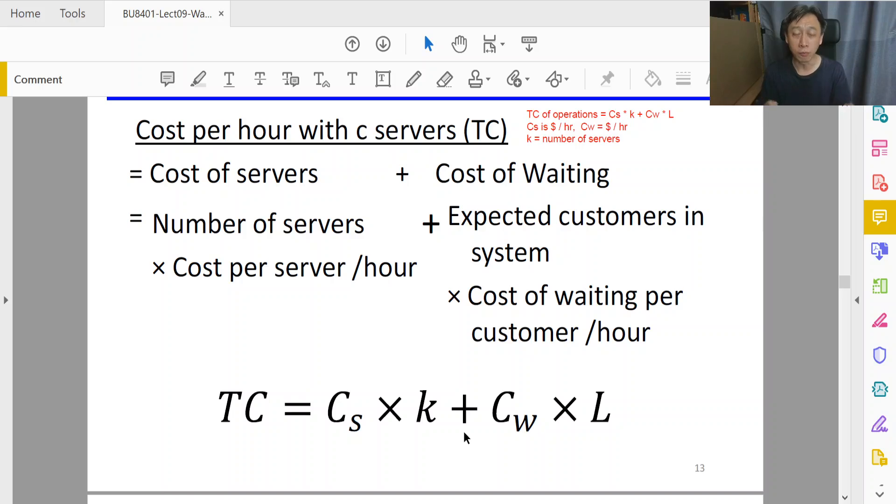So the easiest of them all that captures the essence of total cost of operations of the queue system is this: Cs times k - k is the adjustment variable, how many servers do we need - plus Cw, a constant cost of waiting, times L, the average number of customers unreasonably stuck in our system.